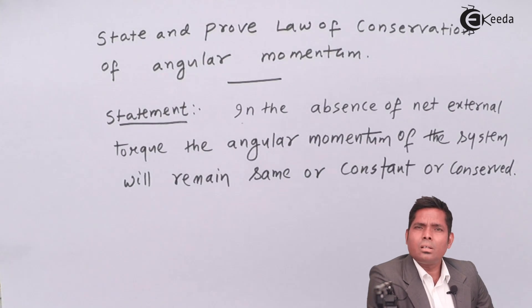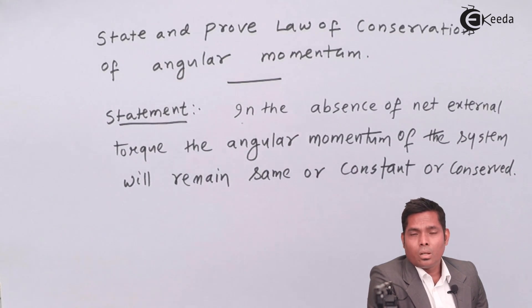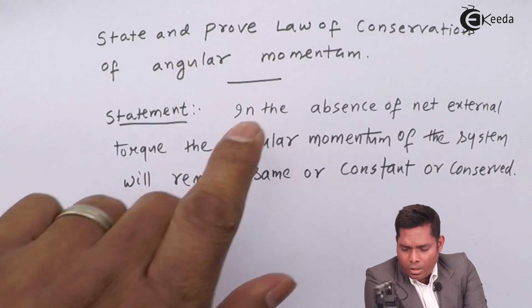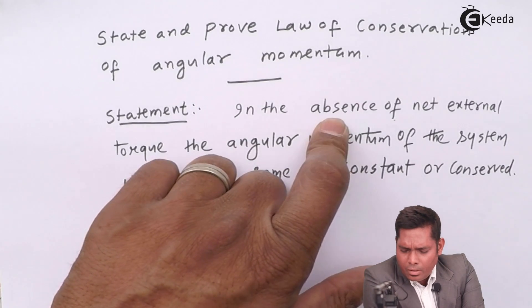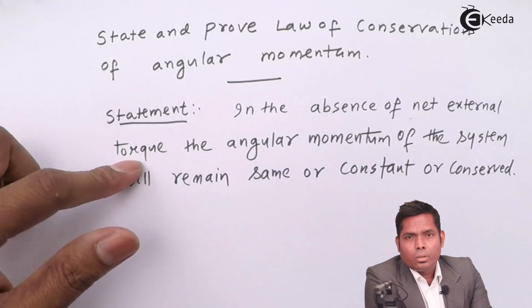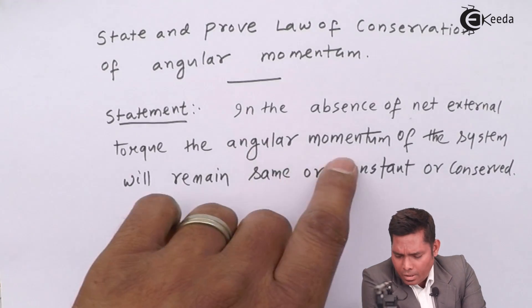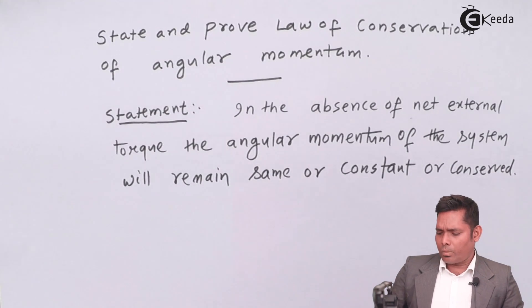We get angular acceleration from torque, just like we get acceleration from force. So if ω has to be constant, then α has to be zero, which means torque has to be zero. Therefore, when the body is rotating, the externally applied torque value has to be zero. In the absence of net external torque — when net external torque is zero, α is zero; when α is zero, ω is constant; when ω is constant, Iω is constant; therefore L is constant. That is the basic idea about the law of conservation of angular momentum.